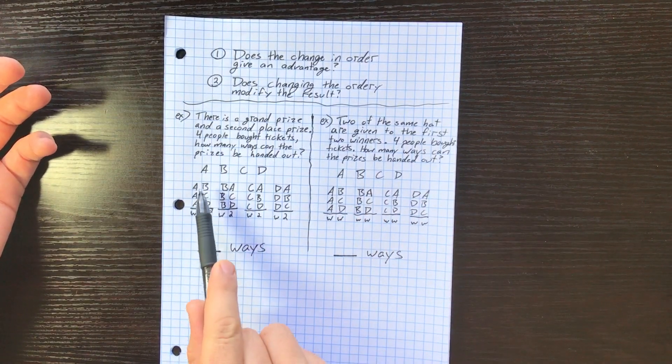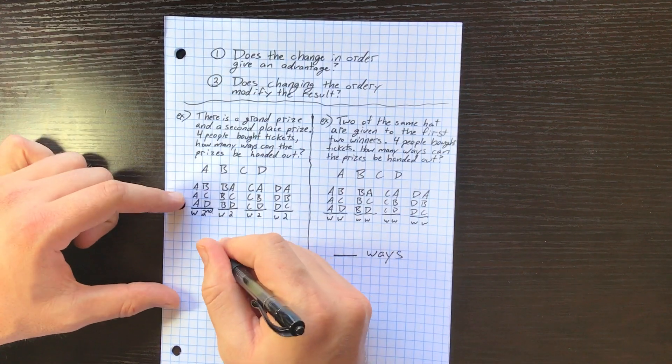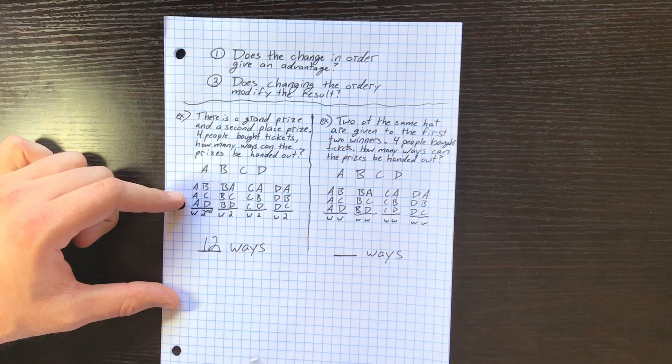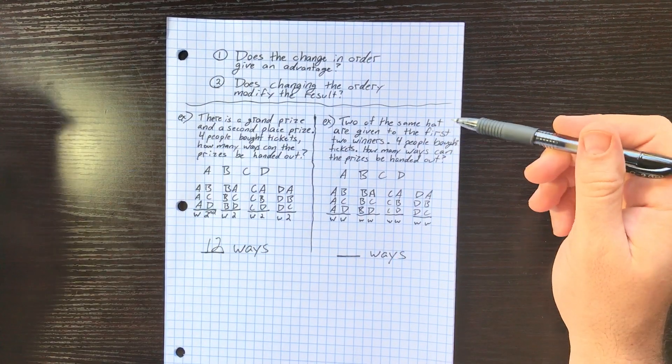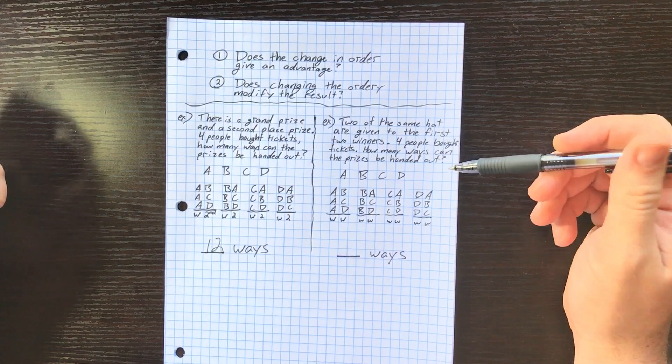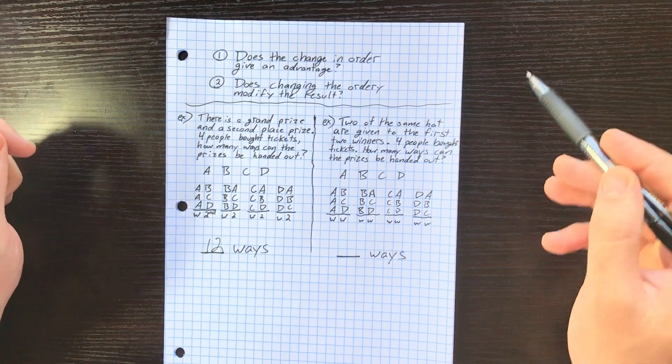So now we can just count the ways these two prizes could be handed out, and it's 1, 2, 3, 4, 5, 6, 7, 8, 9, 10, 11, 12 ways. What if we have the same question but slightly tweaked? Two of the same hat are given to the first two winners. Four people bought tickets. How many ways can the prizes be handed out?